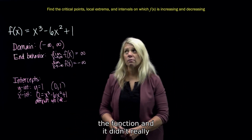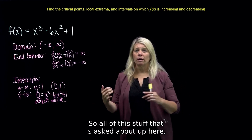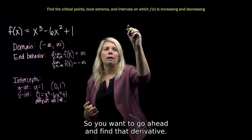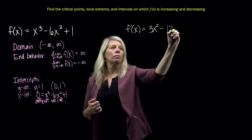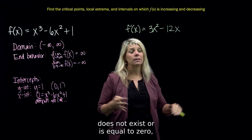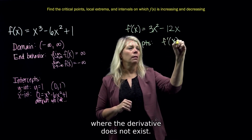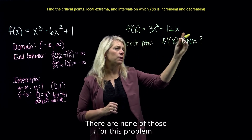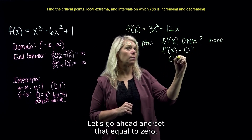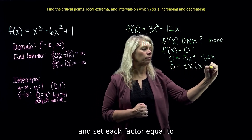All of that was from the original function; it wasn't explicitly asked for, but it's helpful context. The things actually asked — critical points, increasing/decreasing intervals, and classifying extrema — all come from the first derivative. So go ahead and find that derivative. Critical points are where the derivative does not exist or equals zero, while the original function does exist. There are no points where this derivative fails to exist.